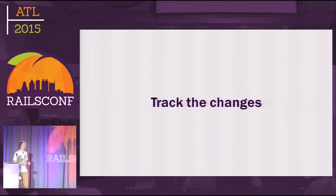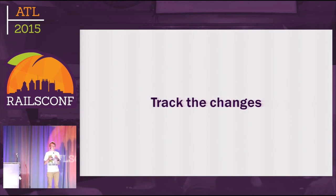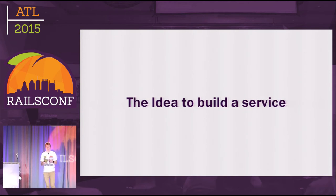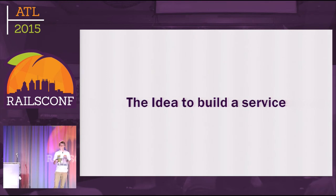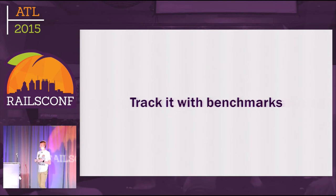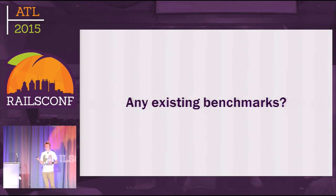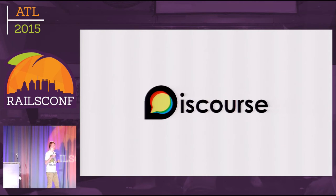Now you have some idea of what kind of performance changes I mean. What if we track these changes to see the overall Rails performance? The idea to build a service to track Rails performance changes was suggested at Rails base camp, and I became really interested because it's a great way to save time for Rails contributors. To track these changes, we need some benchmarks. Are there any existing benchmarks in Rails? Yes — there's a great benchmark right inside the Discourse application, which benchmarks Discourse while it uses Rails as the framework.